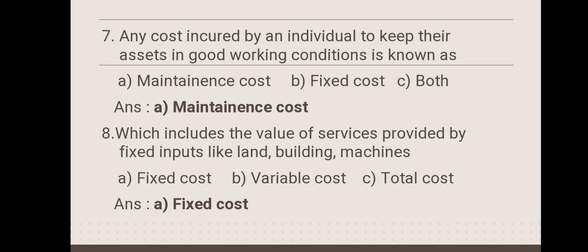Next: any cost incurred by an individual to keep their asset in good working condition is known as — maintenance cost, fixed cost, or both? The answer is maintenance cost. Next: which includes the value of services provided by fixed inputs like land, building, and machines? Option A: fixed cost, option B: variable cost, option C: total cost. The answer is fixed cost.